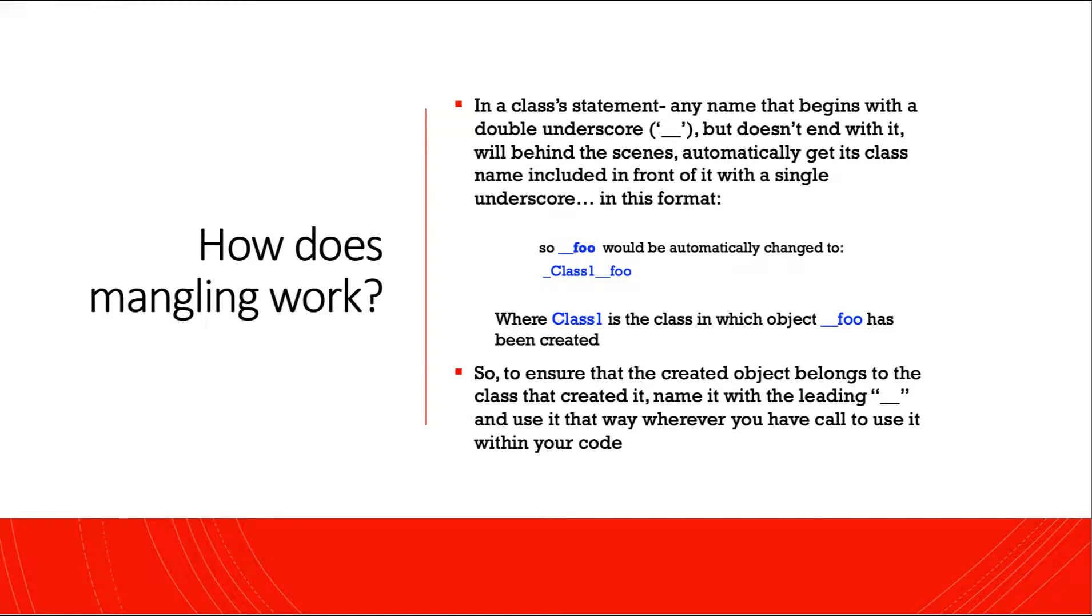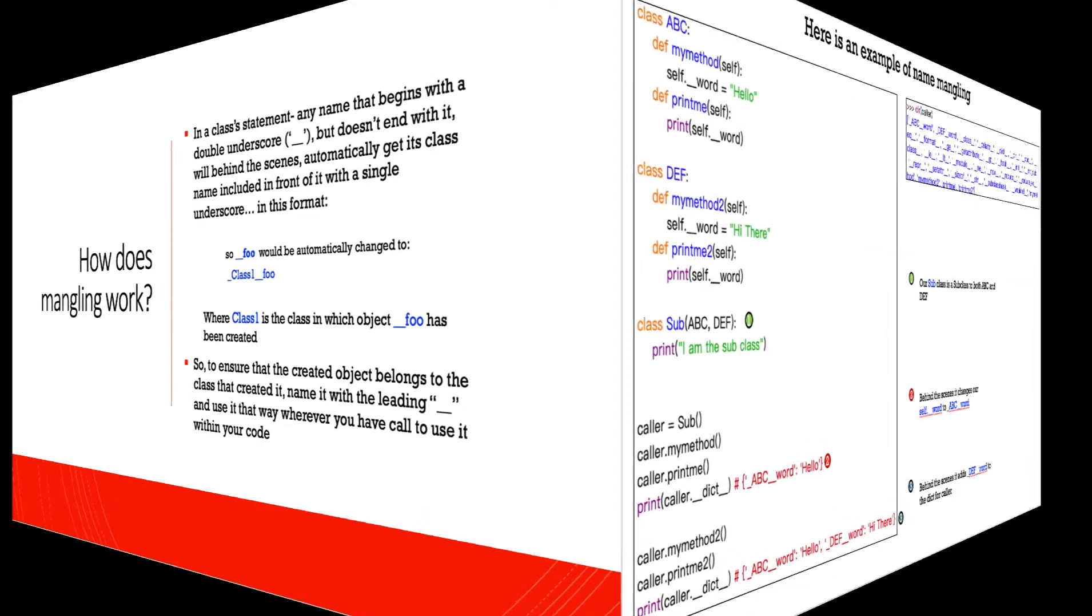So to ensure that the created object belongs to the class that created it, name it with the leading double underscore and use it in that way wherever you call to use it in the body of your code.